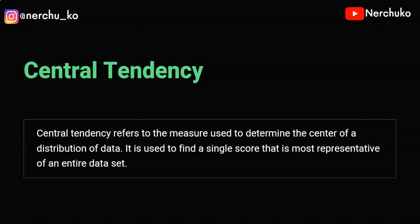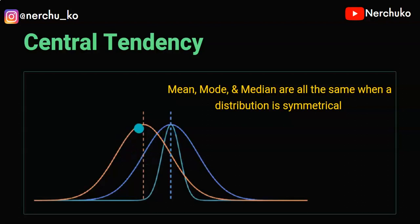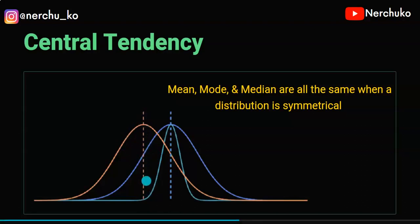Suppose if we have a distribution of data, then we have Mean, Median, and Mode and the values are the same. So if we have a distribution of data, then we have an outlier. Here we have a graph. First of all, we have 3 normal distribution graphs. In the normal distribution, we have Mean, Median, Mode and the values are equal.